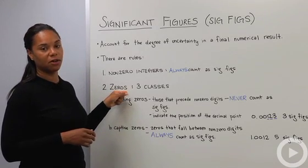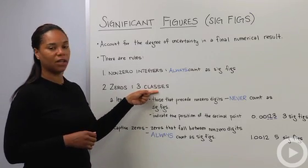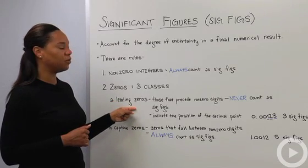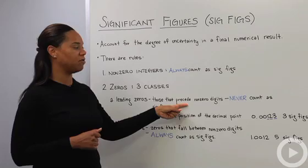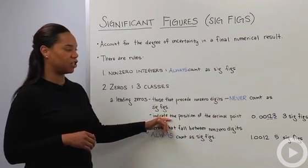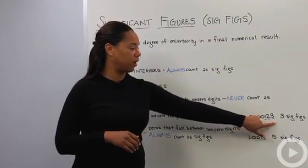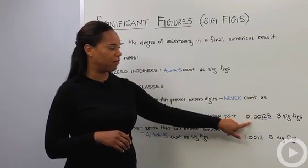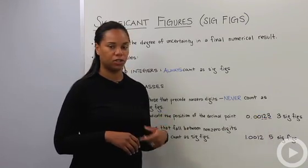Secondly, zeros. Zeros are going to be the largest source of complication. There are three classes of zeros when it comes to counting sig figs. The first applies to leading zeros, those are the zeros that precede non-zero digits, and those guys never count as sig figs. They just indicate the position of the decimal point. So for instance, 0.00123, these zeros are all leading zeros. They never count as significant figures, so this number only has three significant figures. Only the non-zero integers count.